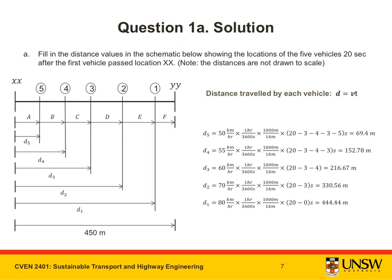Applying a similar procedure to vehicles 3 to 5 yields the following results. As you can see, vehicles arriving at XX at later times do not travel as far along the XX to YY interval. For example, vehicle 4 only reaches a distance of 152.78 meters, and vehicle 5 reaches a distance of 69.4 meters.